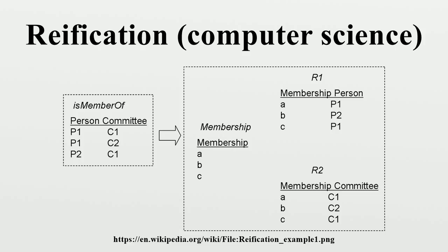Like any other entity, it must be an instance of an entity type. In the present example, the entity type has been named Membership. For each instance of isMemberOf, there is one and only one instance of Membership, and vice versa. Now it becomes possible to add more information to the original relationship. For example, we can express the fact that Person P1 was nominated to be the member of committee C1 by Person P2. The reified relationship Membership can be used as the source of a new relationship isNominatedBy.